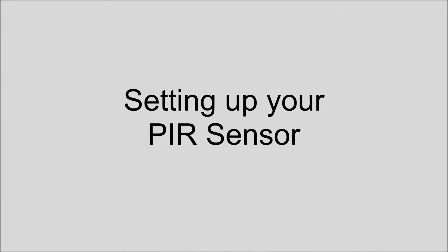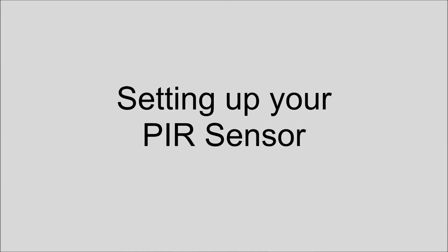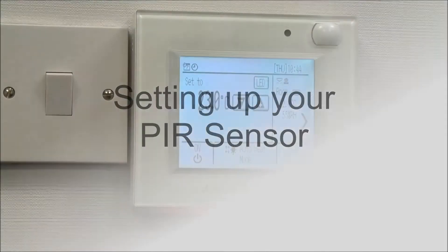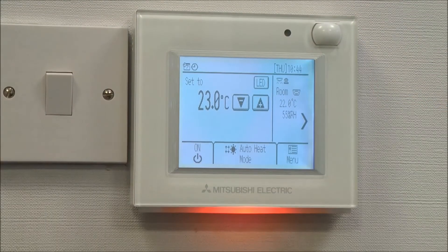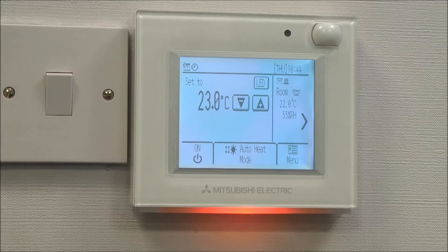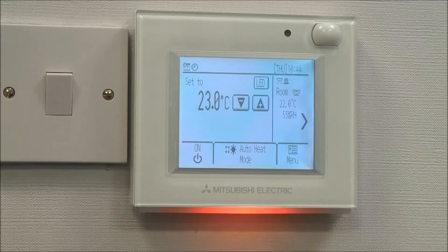Setting up the PIR sensor on the PAR UO2 controller. Here's the PIR sensor on the PAR UO2 controller, and we're going to use this for applications where we don't have constant occupancy, such as meeting rooms.